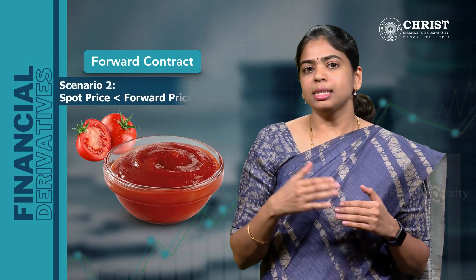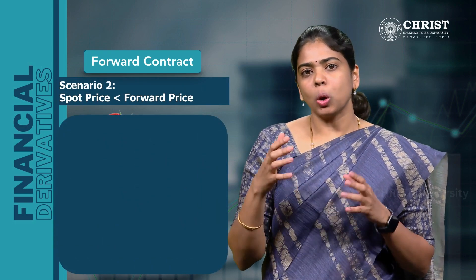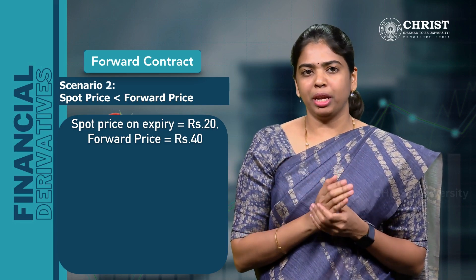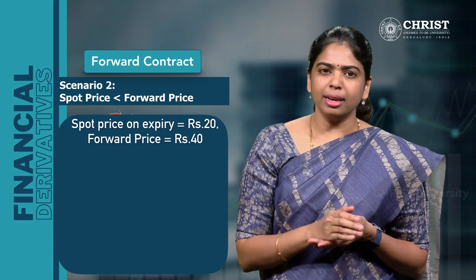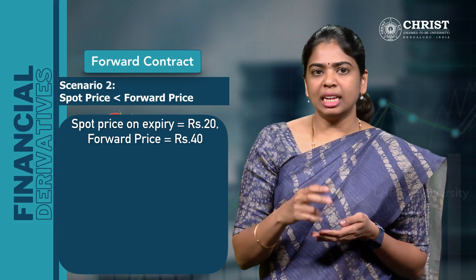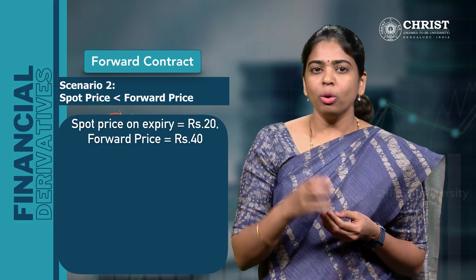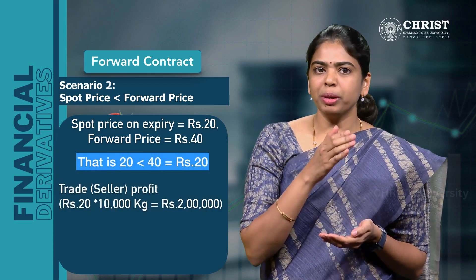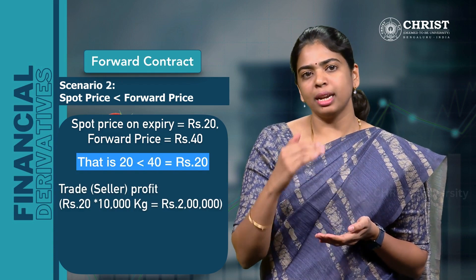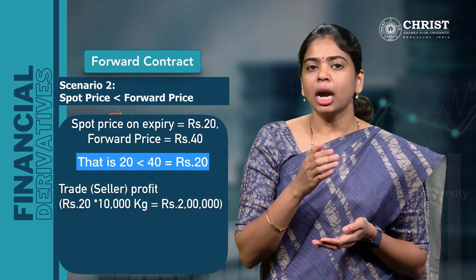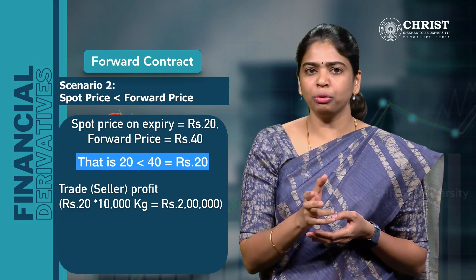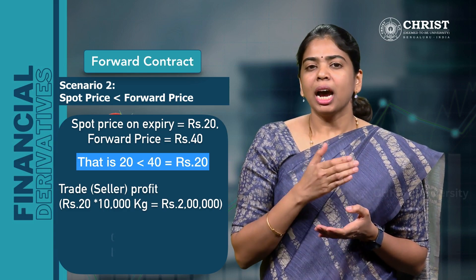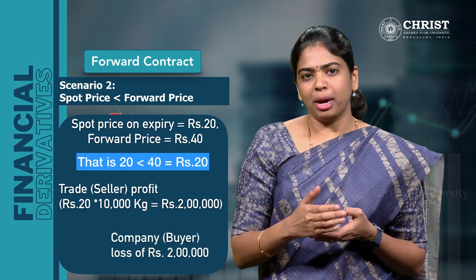Now let us consider the second scenario. What if the spot price on the date of expiry is ₹20 per kg? In this case, the spot price of tomatoes is lesser than the agreed price, and therefore the seller in the transaction gets benefited. Though the tomatoes are selling at ₹20 in the market, the trader will be able to sell 10,000 kg of tomatoes at ₹40 per kg to the ketchup company as per the forward agreement. Thus, the trader earns a profit of ₹2 lakhs and the same is a loss for the buyer, the ketchup company.